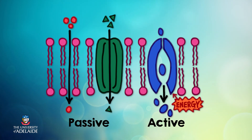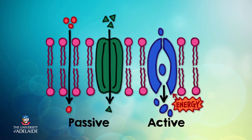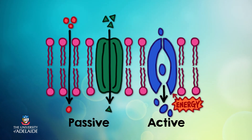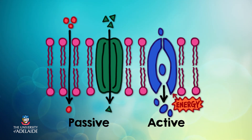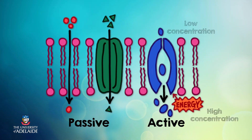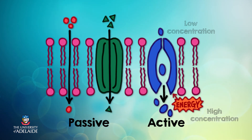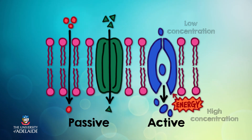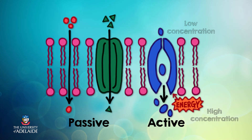In active transport, the cell has to use its own energy to move material across the plasma membrane. Without the cell's energy, a substance wouldn't be able to enter or exit the cell. Active transport is used when substances are moving against their concentration gradient — for example, from an area of low concentration to an area of high concentration. Carrier proteins move substances like ions and glucose into and out of cells via the active transport process.